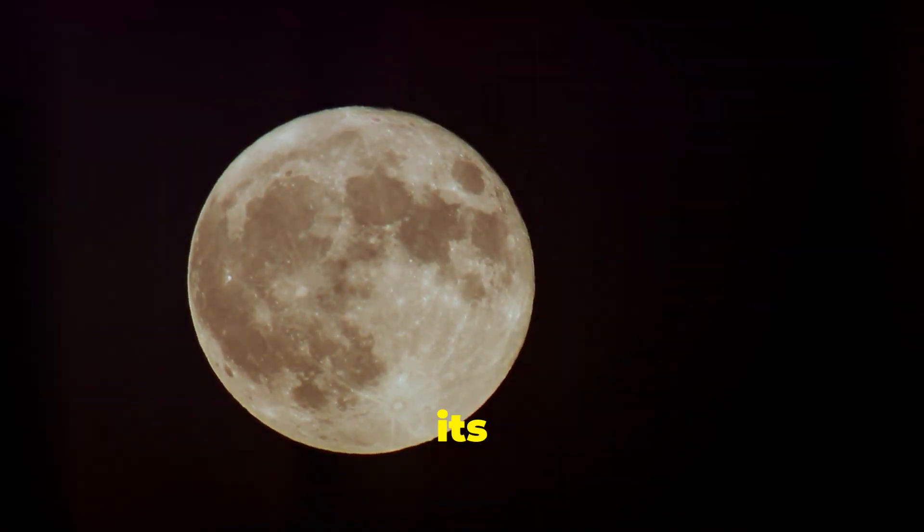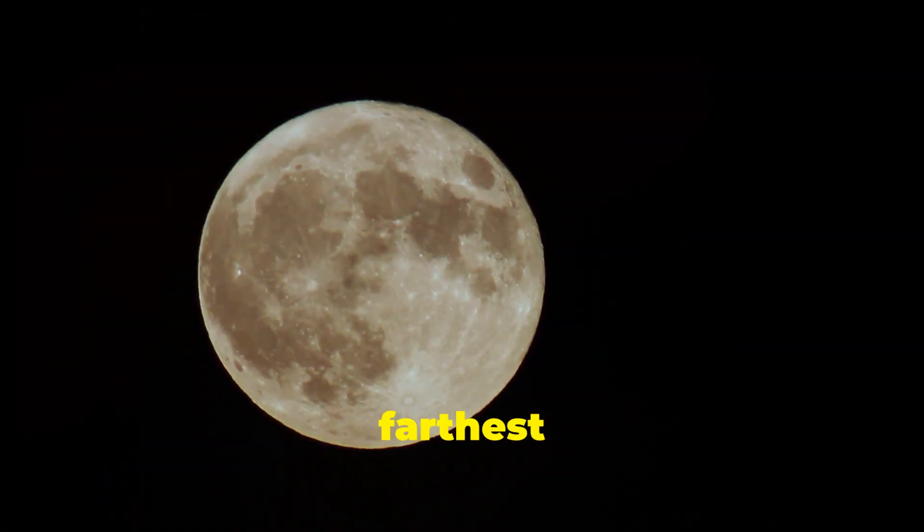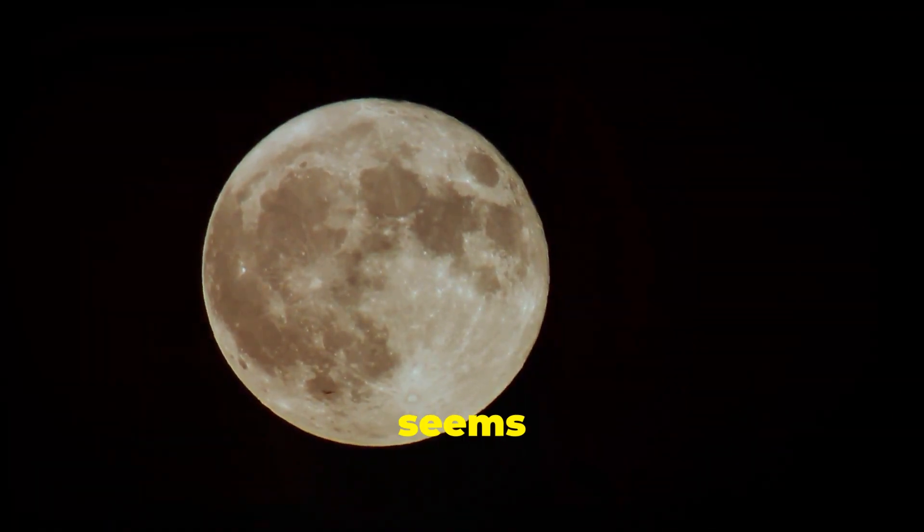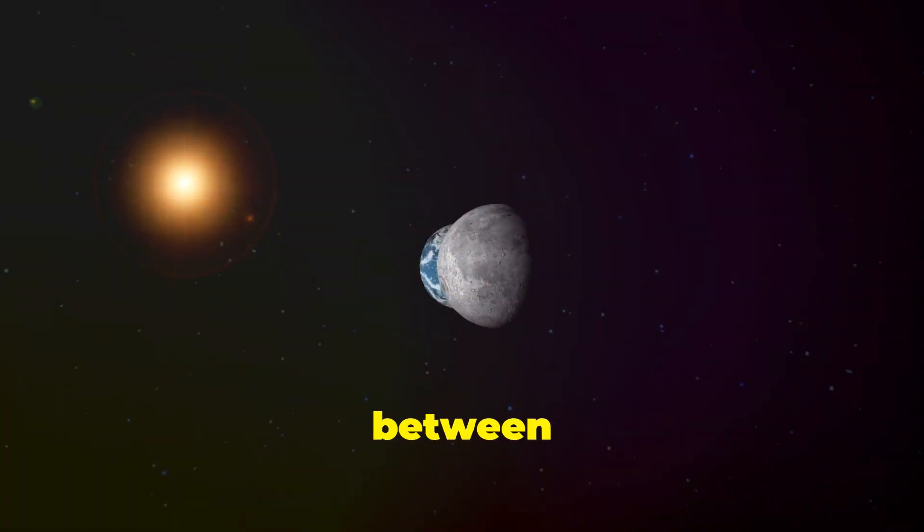At its closest point, called perigee, the moon appears larger and brighter in our sky. At its farthest point, called apogee, it seems smaller and dimmer. This elliptical orbit, along with the gravitational tug-of-war between Earth and the sun, creates a slightly chaotic environment around our planet.